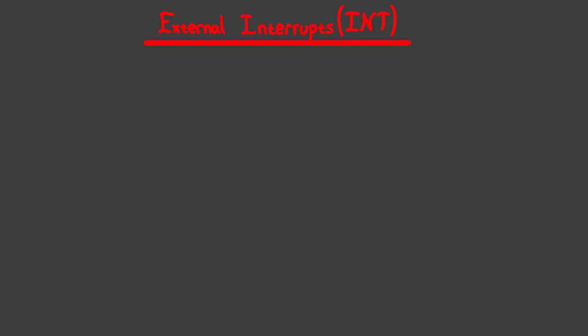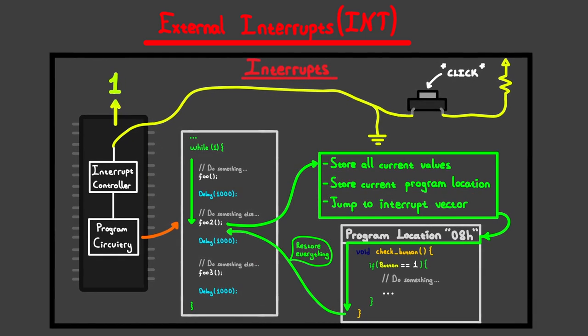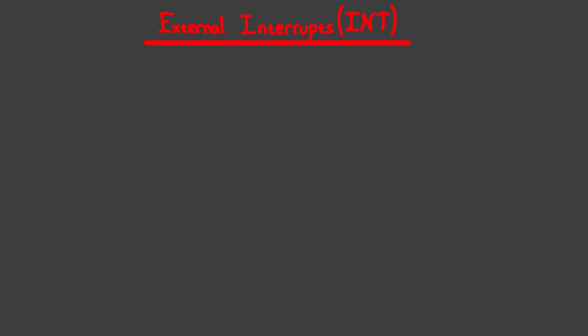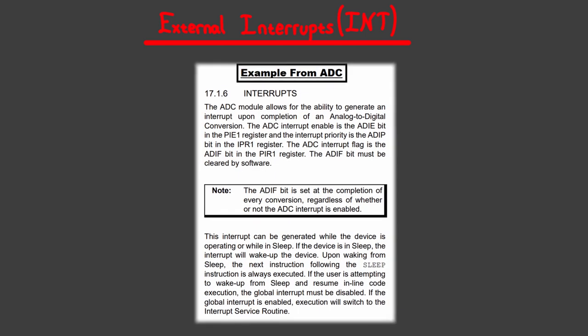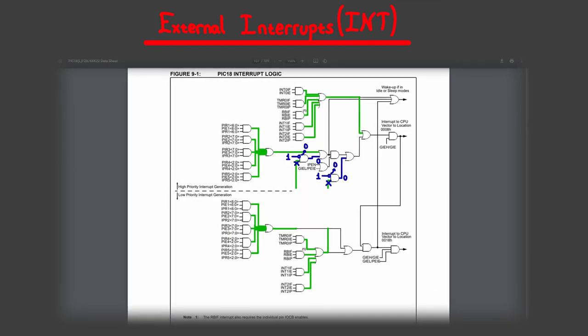This video will be about external interrupt sources, meaning they aren't triggered via any peripheral, but instead are triggered through external means, which will also be relevant to the example I showed you in the previous video about button presses. But be careful — the examples I'm about to show you are specifically for this microcontroller. There are usually no differences between similar microcontrollers, and if there is any, it will be very minor, which will most definitely be specified in the datasheet, and the underlying principle will always be the same.